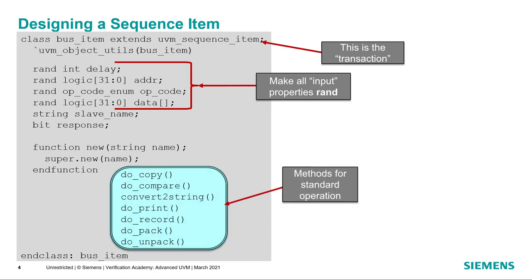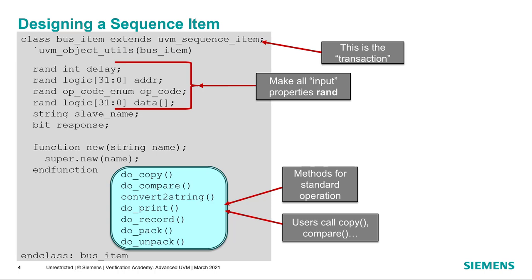These methods are called doCopy, doCompare, convertToString, doPrint, doRecord, doPack, and doUnpack. It's important to understand that when you actually use these methods, you don't call the do-underscore methods directly. There are equivalent methods — copy, compare, etc. — that the user calls, and those cause the do-underscore methods, which you define for the transaction, to get called.